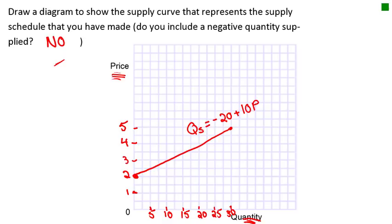Just to note: economists have mixed up the conventional axes. Looking at the supply function, price is the independent variable and quantity supplied is the dependent variable — you'd expect price on the x-axis, but economists put it on the y-axis. This won't be asked in an IB exam, but it's worth noting the difference between how economists and mathematicians set up their graphs.